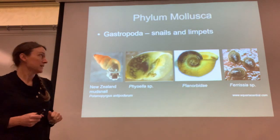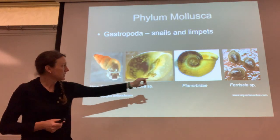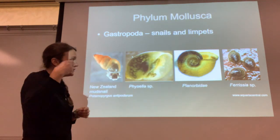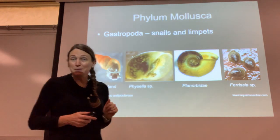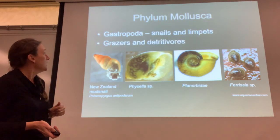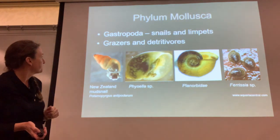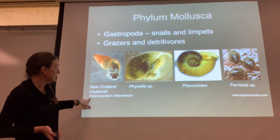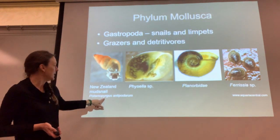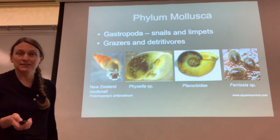Here we have the phylum Mollusca. Gastropods are snails and limpets — some snails are right-handed, some are left-handed, some are ram's horn shaped or planorbid. We also have freshwater limpets, basically just like marine limpets but freshwater. They tend to mostly be grazers, some are detritivores. This is a New Zealand mud snail — a really nasty invasive species that's taken over Capitol Lake downtown, and I've started to find it in streams at Mount St. Helens, which is really disappointing.